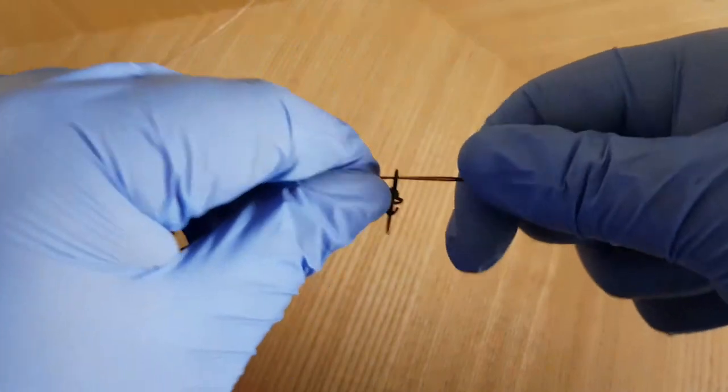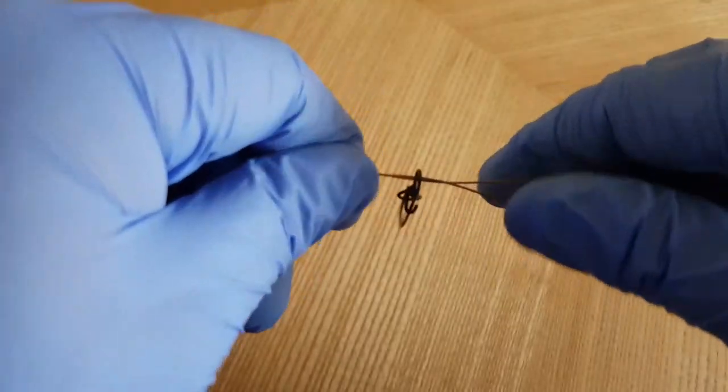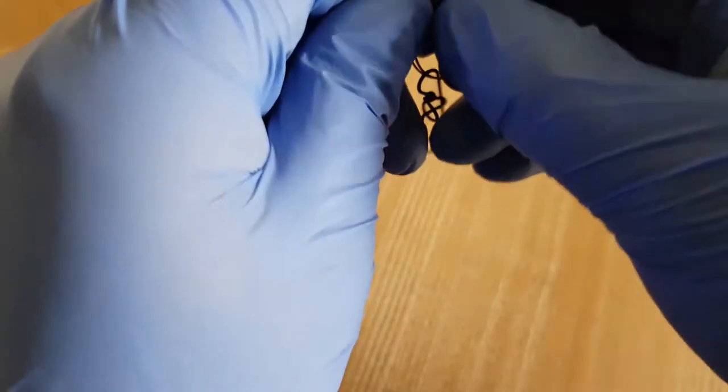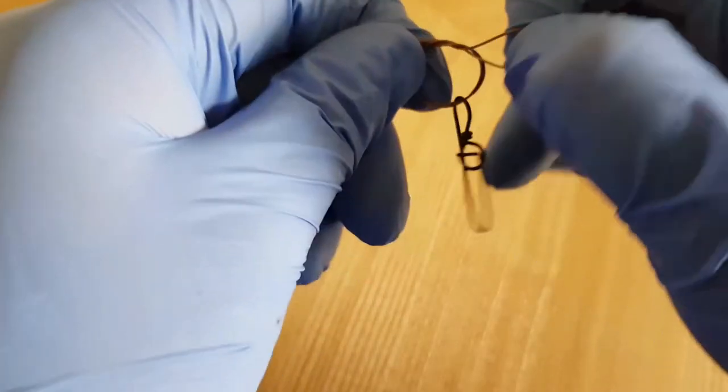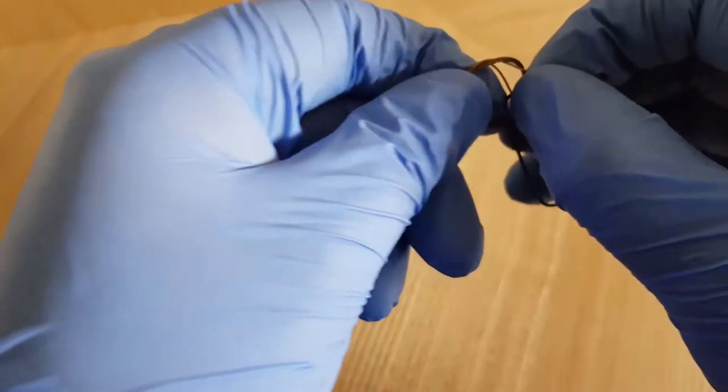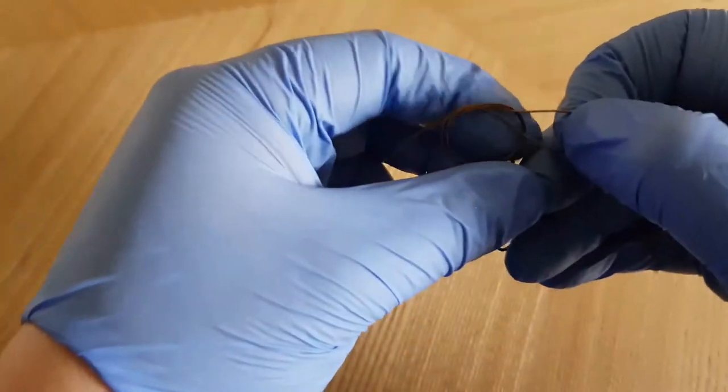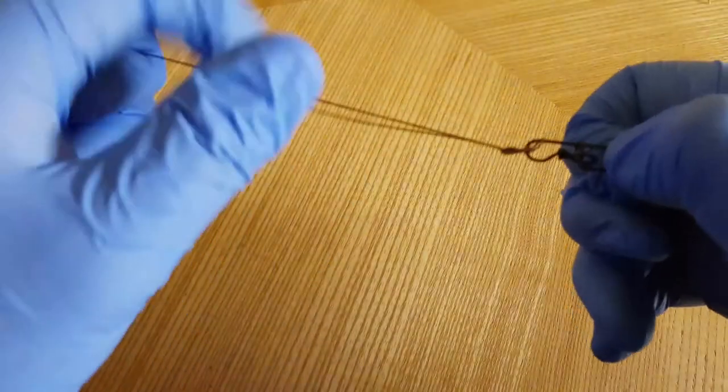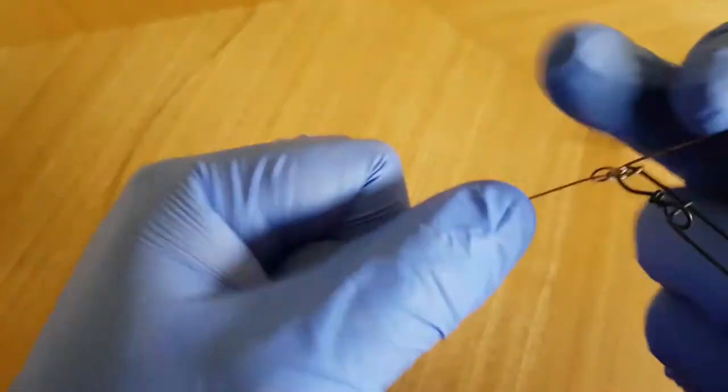So attaching the top end in. Again, same, pushing the line through and then back through on itself. Simple overhand knot. So that's just like that. Push this through.